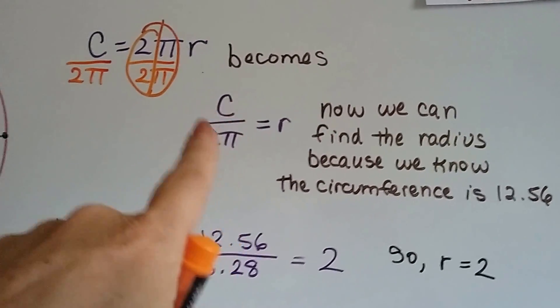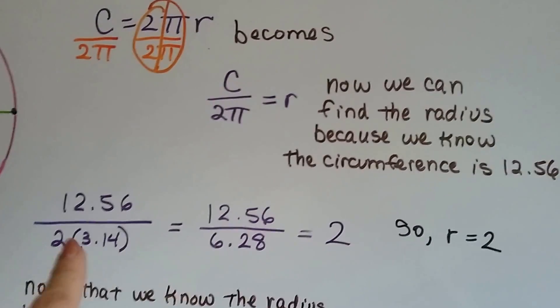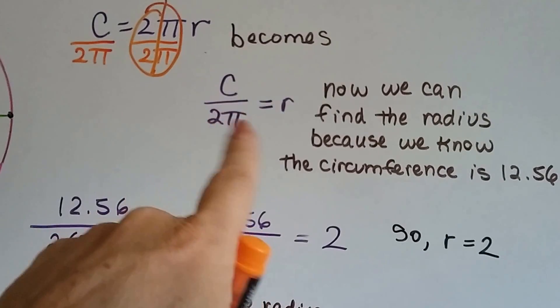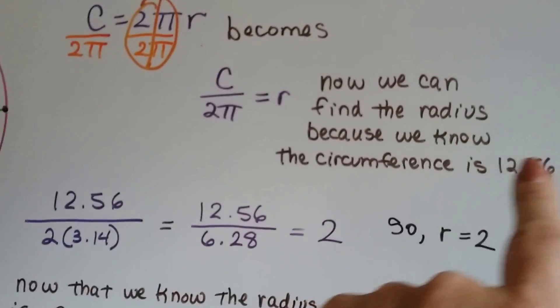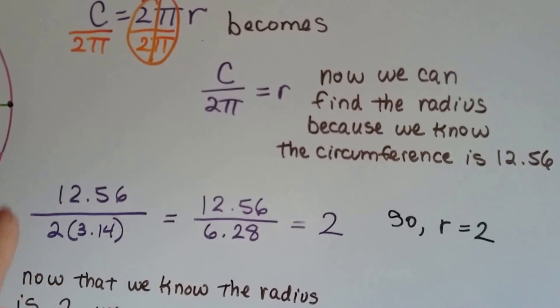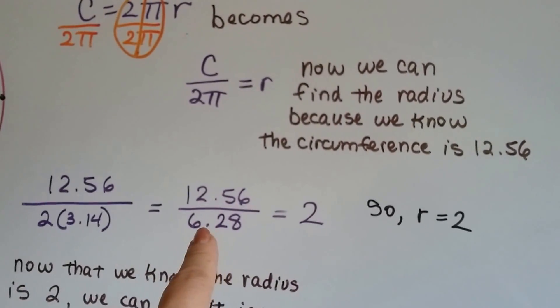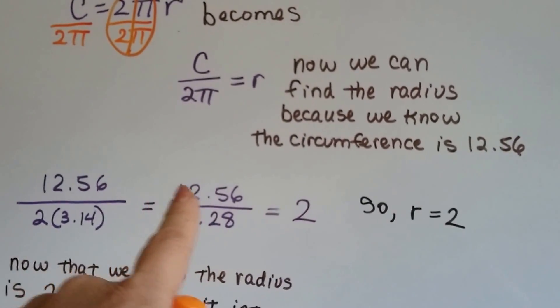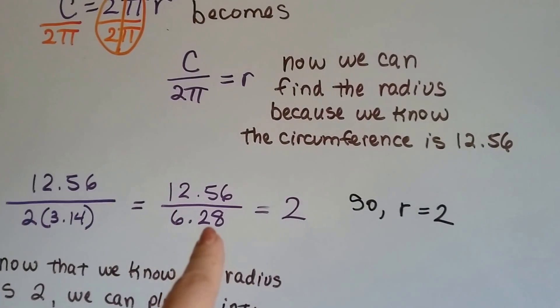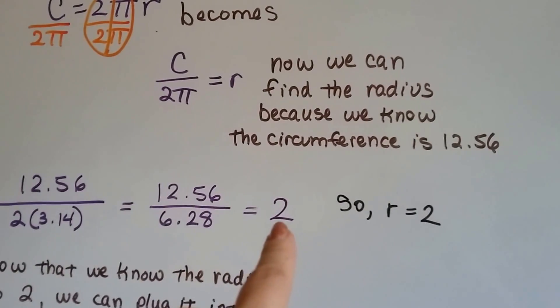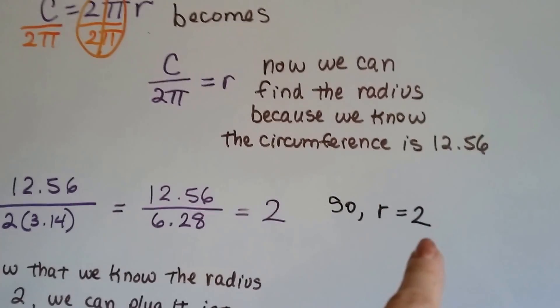So, we do this, circumference divided by 2, circumference over 2 pi. So, we put the 12.56 as the numerator, 2 times pi down here, 2 times 3.14 is 6.28. So now we've got 12.56 divided by 6.28. Well, that's 2. That means the radius is a 2.